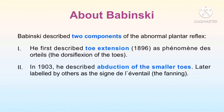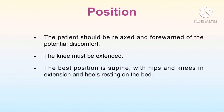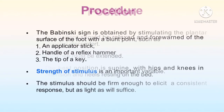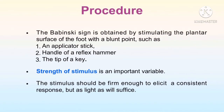Let us talk about the position and procedure. The patient should be relaxed and forewarned of the potential discomfort. The knee must be extended and the best position is usually supine. To perform the Babinski sign, the plantar surface of the foot is stimulated with a blunt object such as an applicator stick, handle of the hammer, the reflex hammer, or the tip of a key. The strength of the stimulus is an important variable.